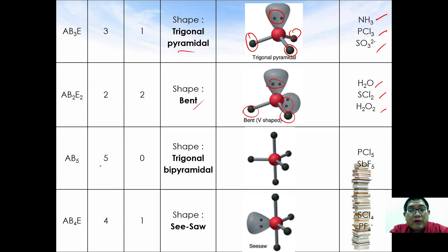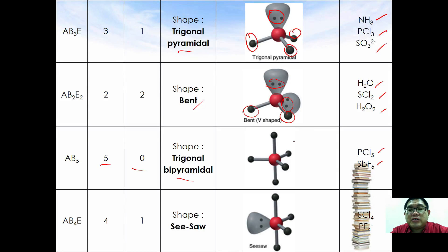If we have five surrounding atoms and no lone pair electrons, the molecular shape is trigonal bipyramidal. Examples include PCl5 and SPF5. In terms of hybridization, AB5 takes the hybridization of sp3d.